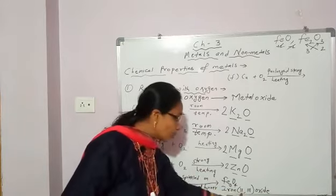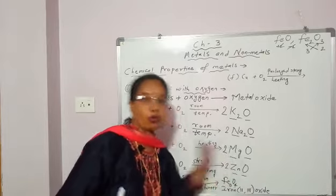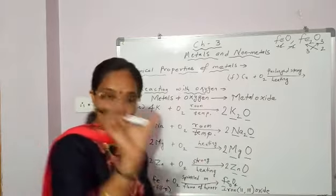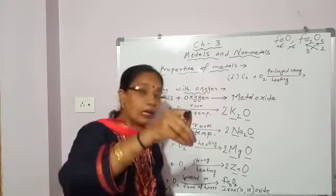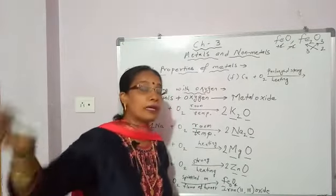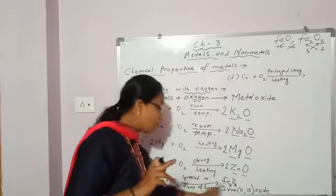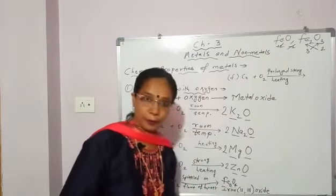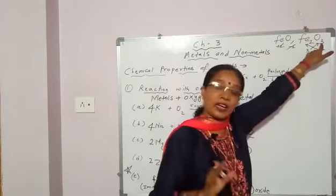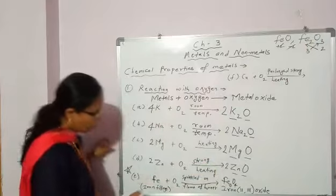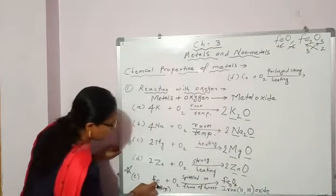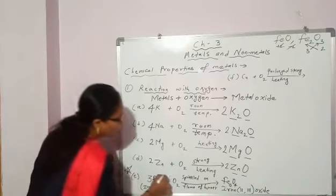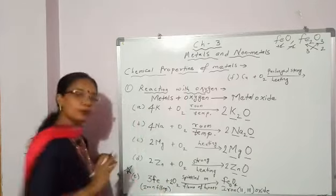Iron(II,III) oxide Fe₃O₄ is formed. Keep in mind there is a slight difference here: iron when reacting with oxygen — a piece won't react on heating, so you sprinkle iron filings on the flame of the burner. Now balance the equation: how many iron atoms? 3 on the product side, 1 on the reactant side — add 3 in front. Oxygen: 4 on the product side, 2 on the reactant side — add 2. Two twos are 4. Now it is balanced.